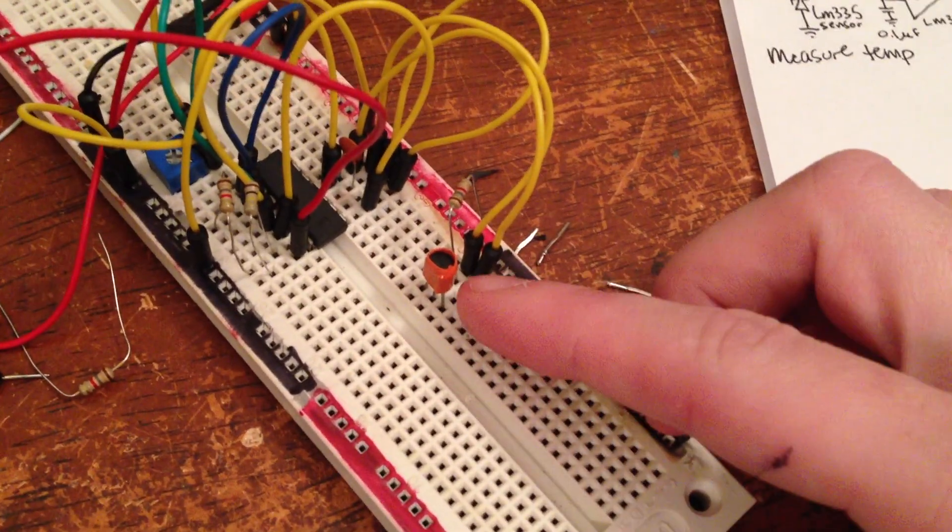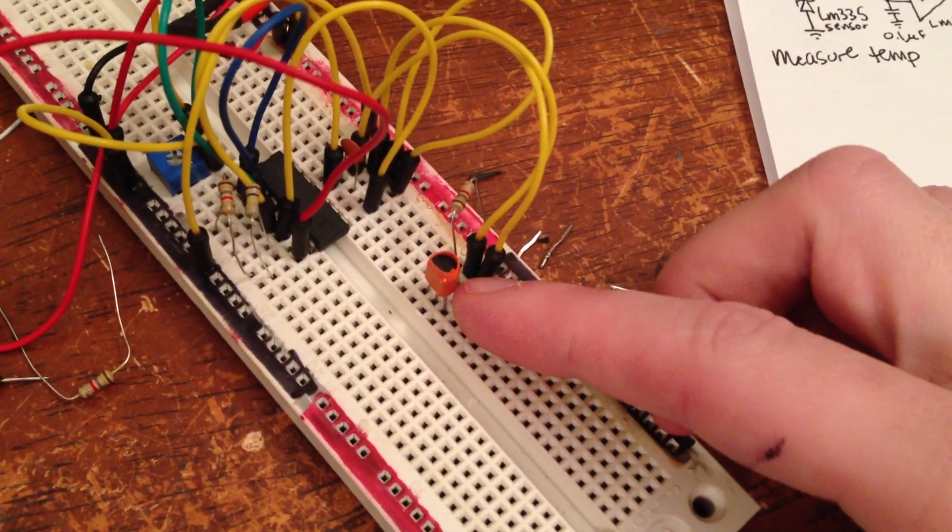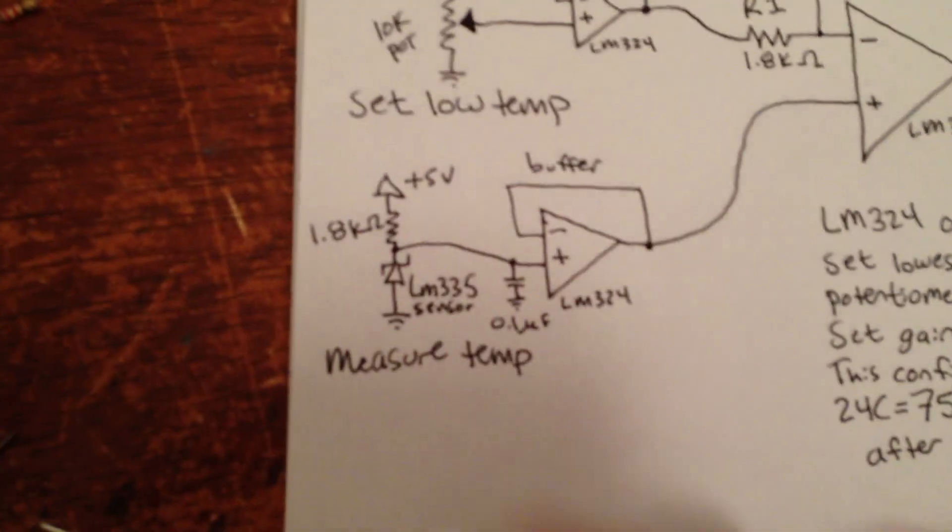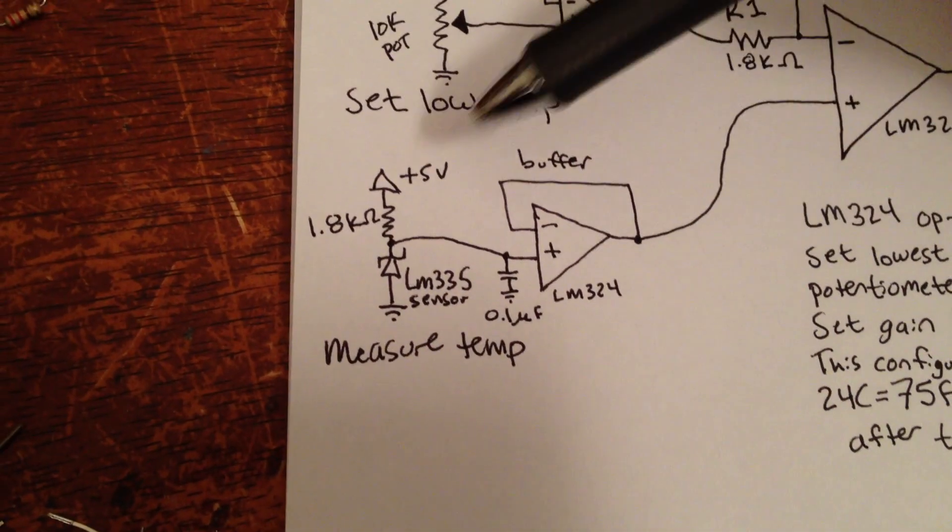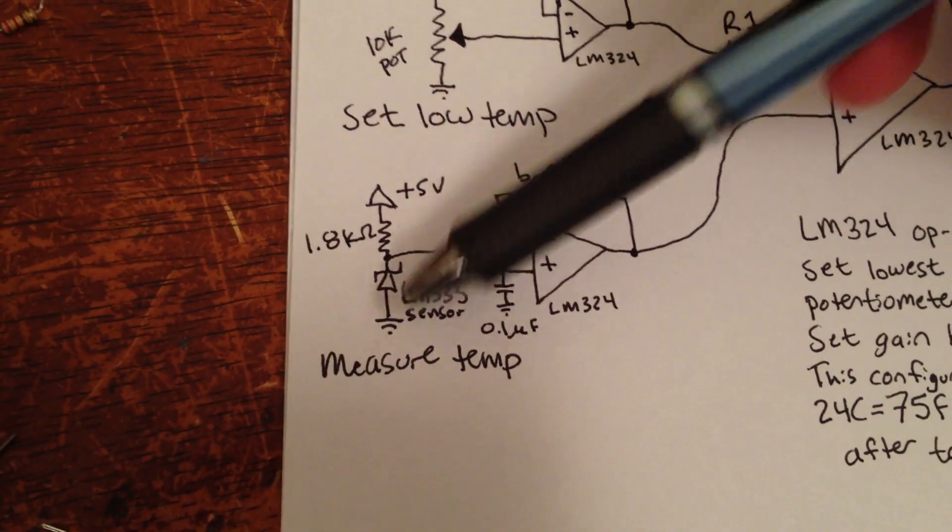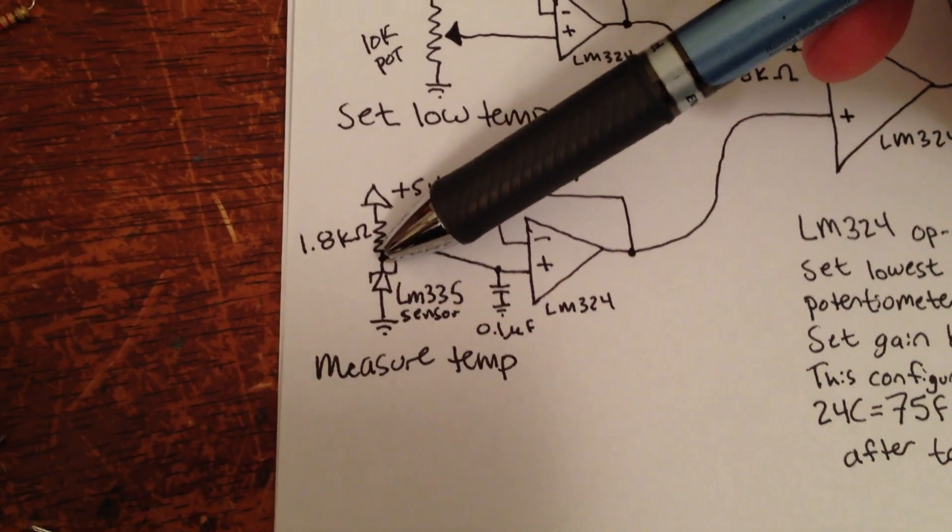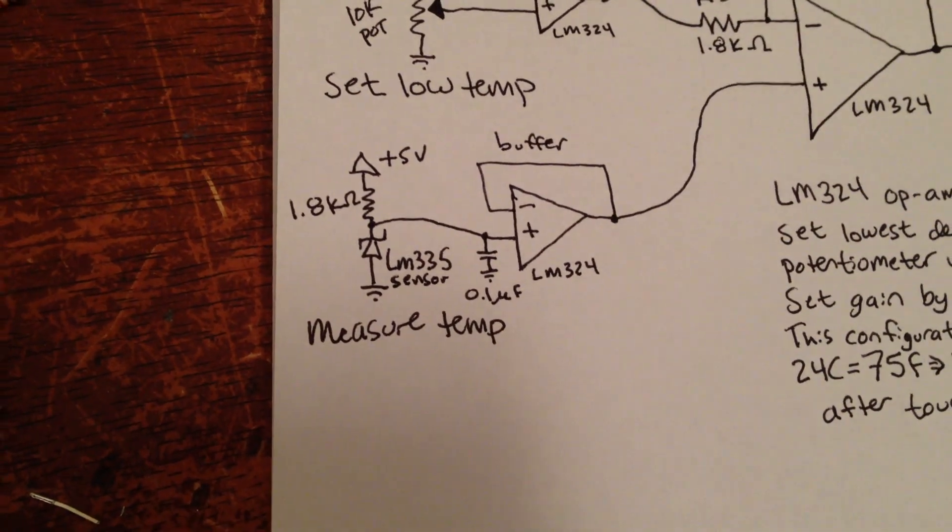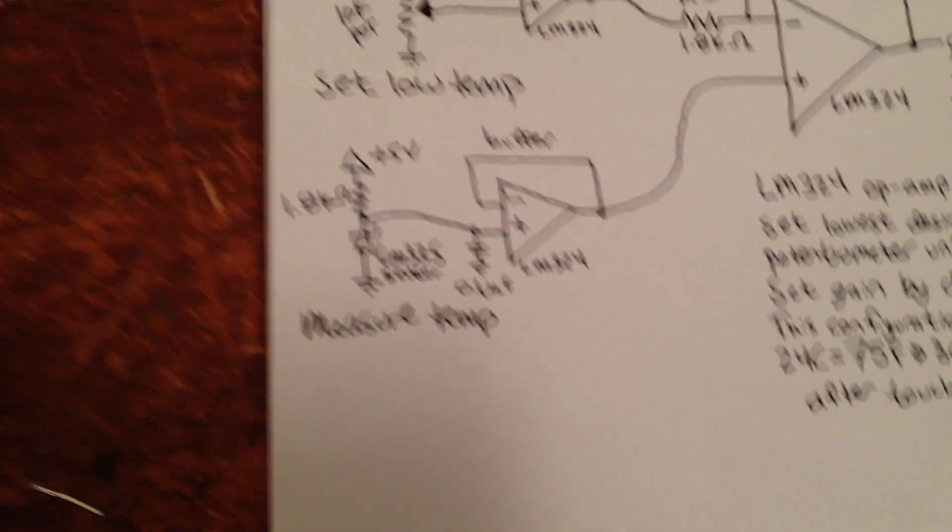This is an LM335 linear temperature sensor, and it acts like a Zener diode. If you apply some positive voltage to one side of it, it'll allow some current to go through so that the potential at this point will be a number in Kelvin.